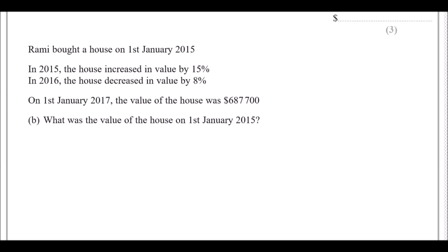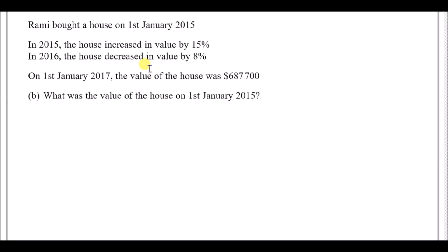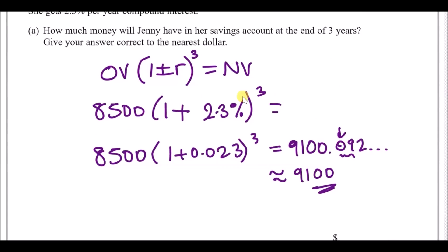Next: Rammy bought a house on the first of January 2015. In 2015 the house increased in value by 15%, and the next year decreased in value by 8%. On the first of January 2017 — two years later — the value was six hundred and eighty-seven thousand seven hundred dollars. What was the original value?